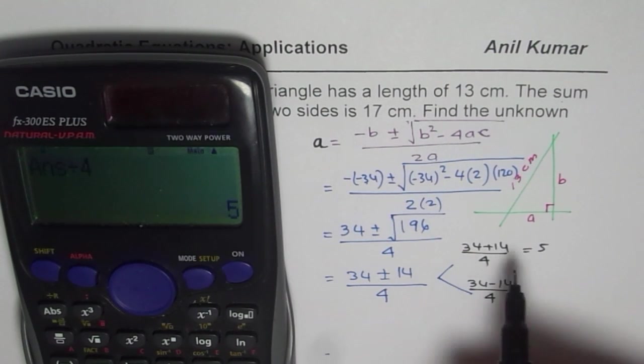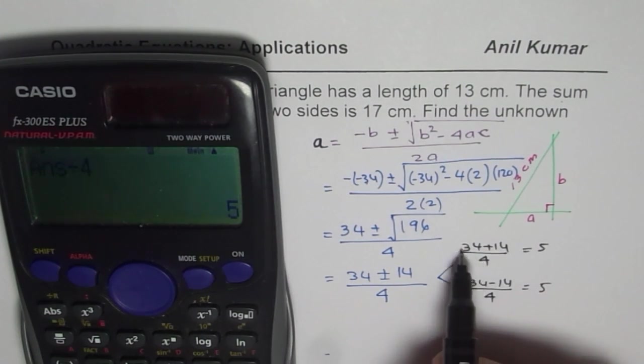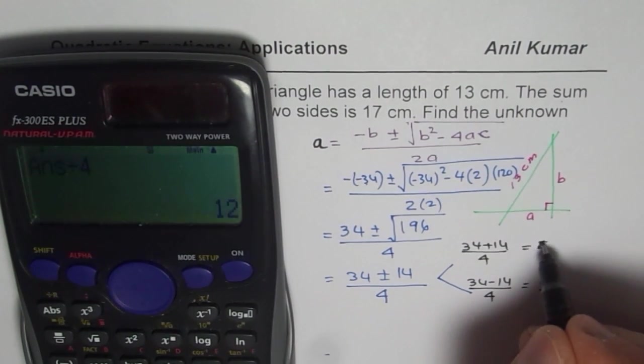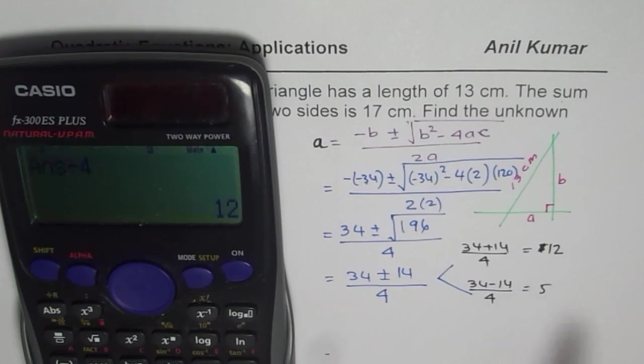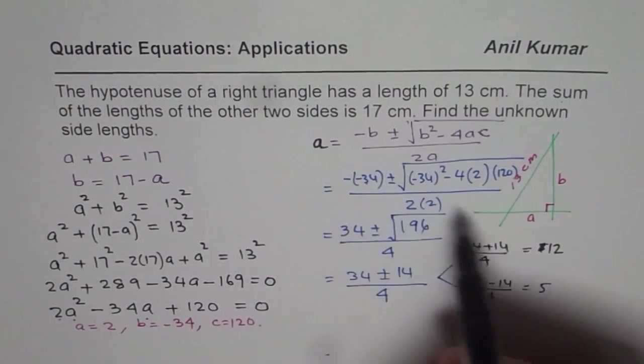Oh, we did minus, I think. So, okay. So 5 is here. Let's add them and find. 34 plus 14 equals to divided by 4 equals to 12. So this we get 12. So these are the two possibilities for side length of A.